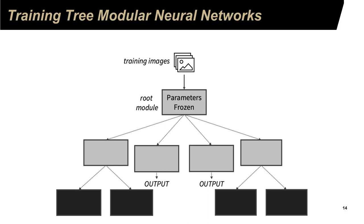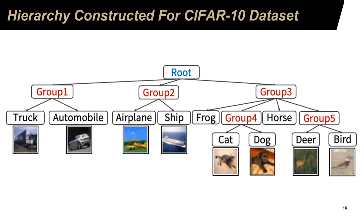The next step is to train the neural networks. We will use the same backpropagation method, but we will start by training the root module first, because from the root module we already know what the expected outputs are. After the root module has been trained, we train the children nodes. For each node, the input is the output from the parent. We start from the root, then train the children, then the grandchildren.